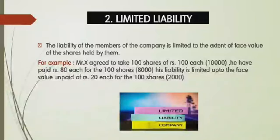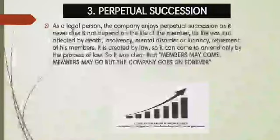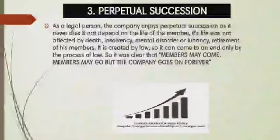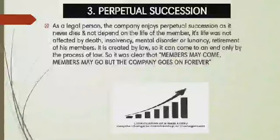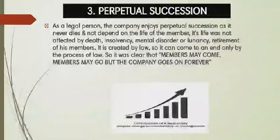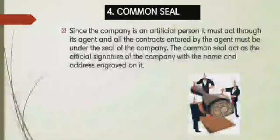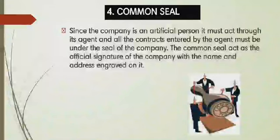The third one is perpetual succession — it means the continuous existence of a company. Members will come and go from the company; members may come, members may go, but the company will go on forever. It has a continuous existence. It was created by law, so it can only come to an end by law.